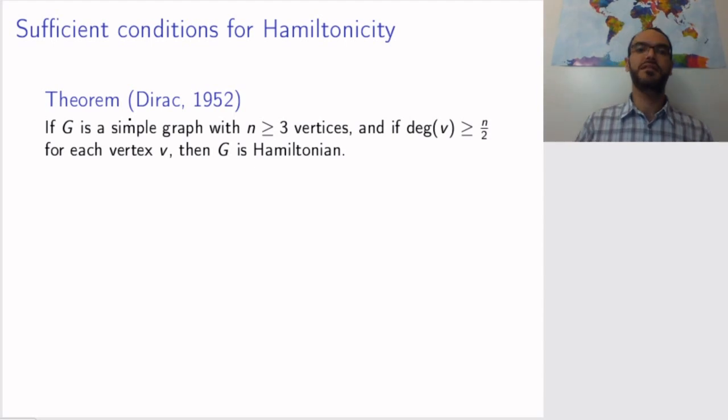But still, you can give sufficient conditions and necessary conditions for a graph to be Hamiltonian. One sufficient condition, meaning that if the condition is fulfilled then the graph is Hamiltonian, but not necessarily the other way around. One such condition was given by Dirac in 1952. Dirac said that if you take a simple graph with at least three vertices, and if the degree of each vertex is at least half the total number of vertices, then the graph is Hamiltonian.